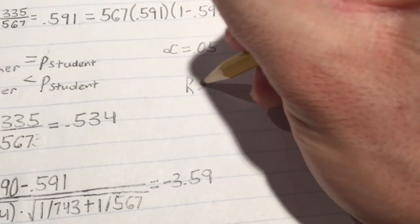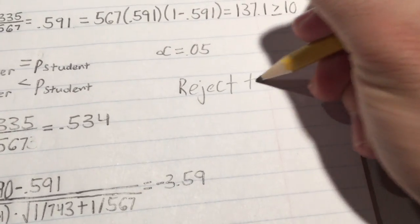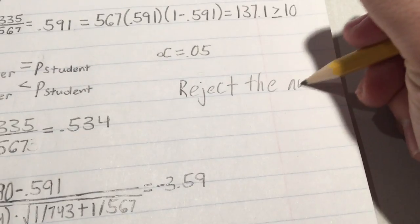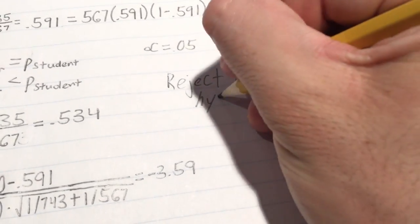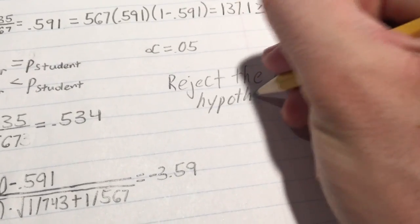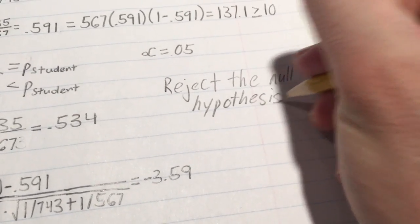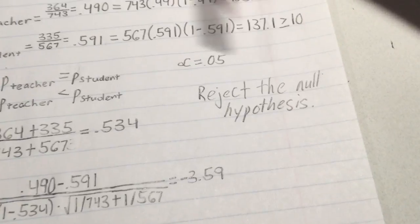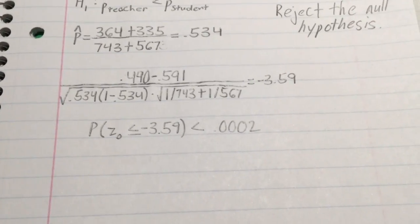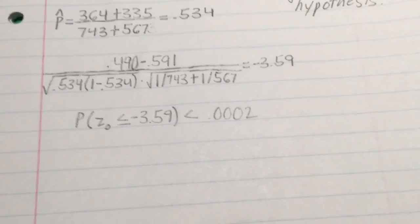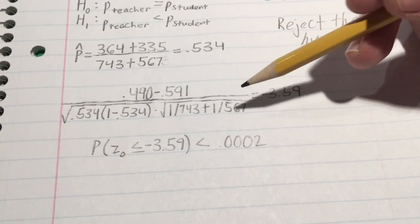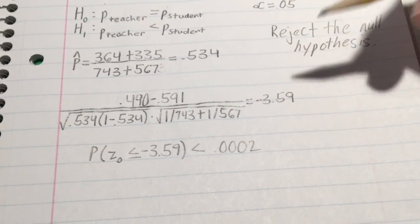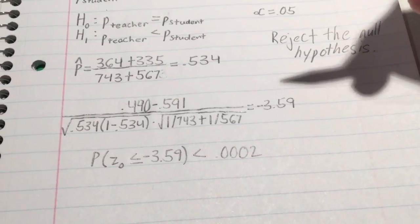So to conclude, that would mean that there is sufficient evidence at the level of significance of 0.05 to conclude that the proportion of students who will pass the class is lower with traditional lecture-based instruction than student-centered instruction.